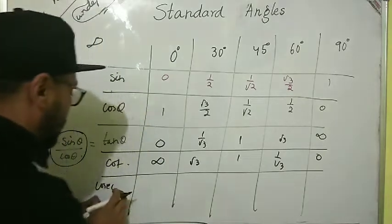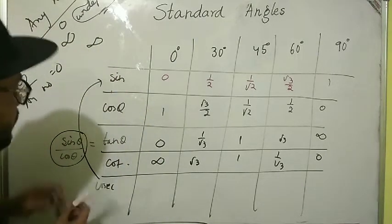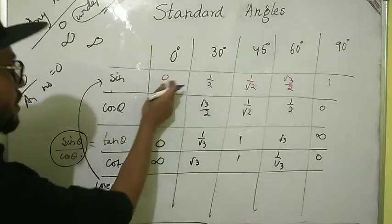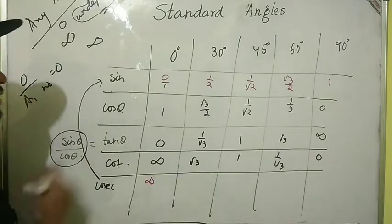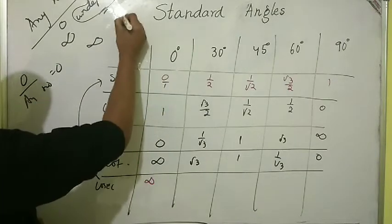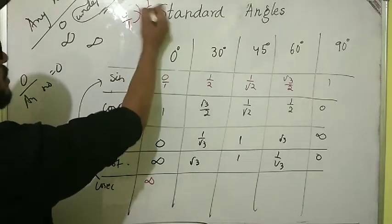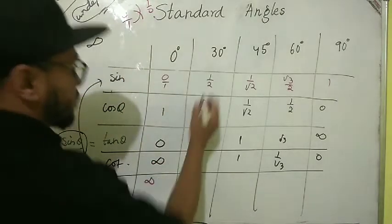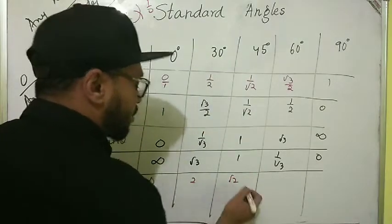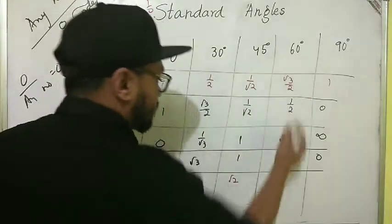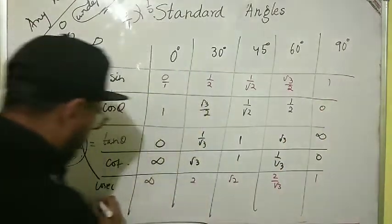For cosec, it is the reciprocal of sine. So cosec 0° = undefined (since 1/0), cosec 30° = 2, cosec 45° = √2, cosec 60° = 2/√3, cosec 90° = 1.